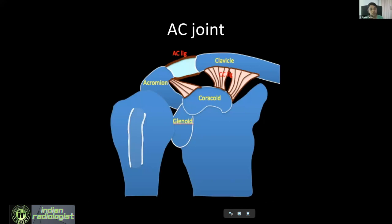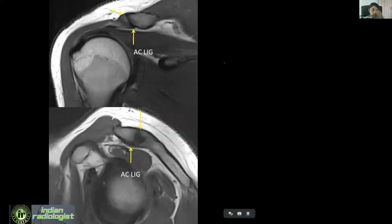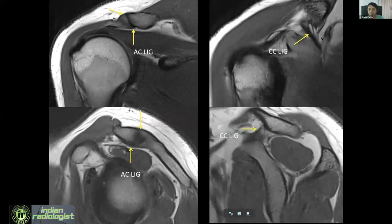The acromioclavicular joint is between the acromion process and the distal end of clavicle. It is stabilized by the superior and inferior acromioclavicular ligaments and the coracoclavicular ligament between the coracoid process and the clavicle. The AC ligaments are better seen on coronal images running along the capsule, where you can appreciate the thickening of the inferior and superior acromioclavicular ligaments. The coracoclavicular ligament is better evaluated on a sagittal image, where you can see the coracoid process, the clavicle, and the coracoclavicular ligaments.